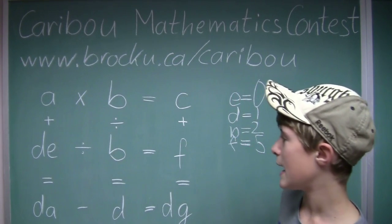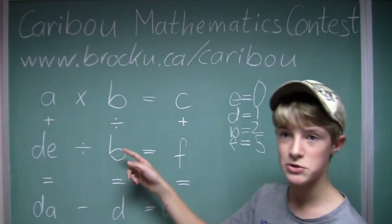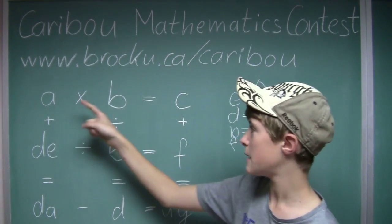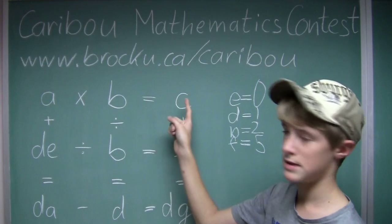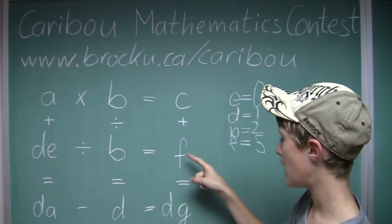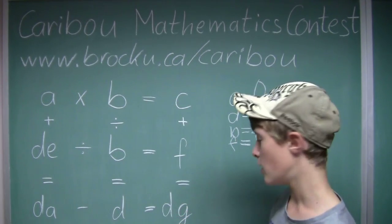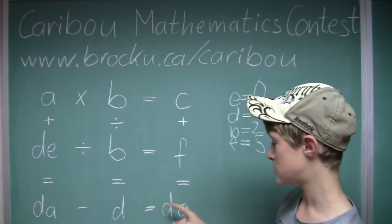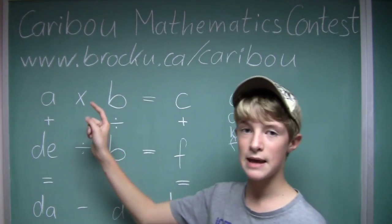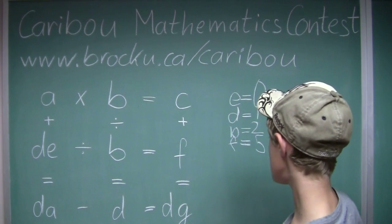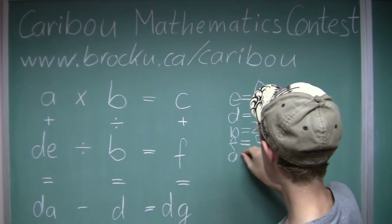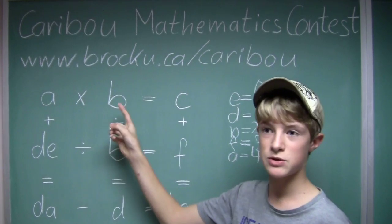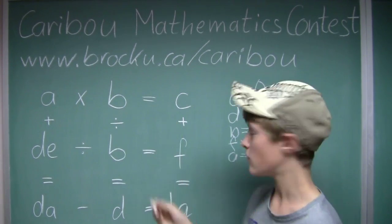And that would be 10 divided by 2 equals 5. So f equals 5. Now that we know b is 2, we can try up here. So we would start off with 3 times 2 equals 6. And 6 plus 5 equals 11. Now that can't work because that would have to be dD, which is 11. So that means a has to equal 4. And that would be 4 times 2 equals 8. So c has to equal 8.